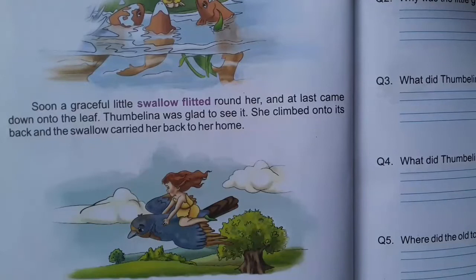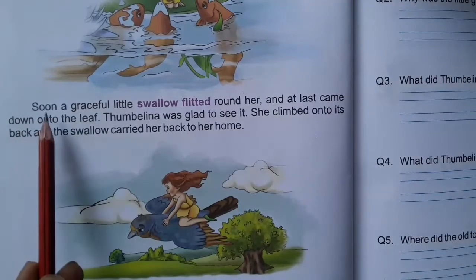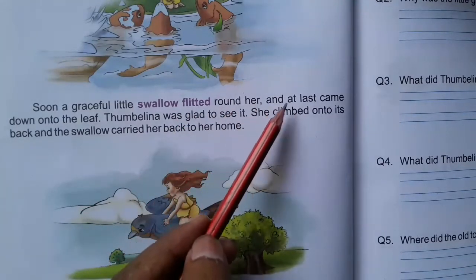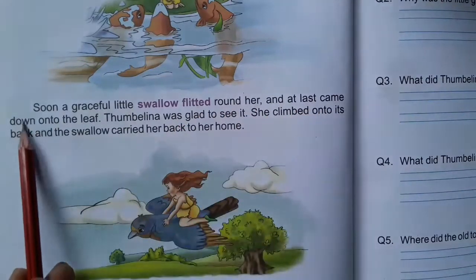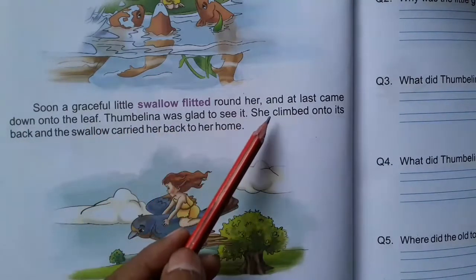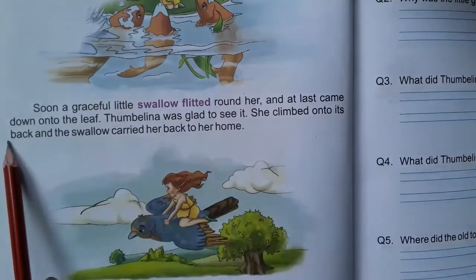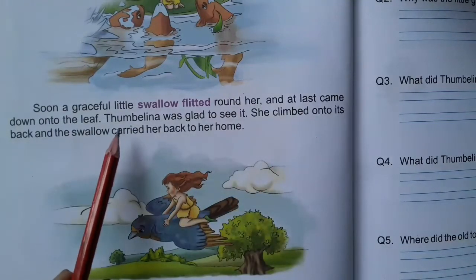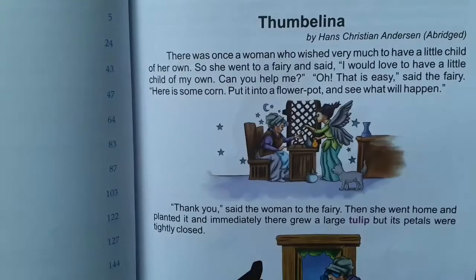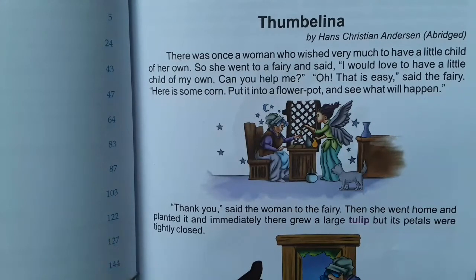That is the last paragraph of the story. Soon a graceful little swallow flitted round her and at last came down onto the leaf. Thumbalina was glad to see it. She climbed onto its back and the swallow carried her back to her home. So students, today we have read the story. As per your homework, read the story again and again to practice your reading.